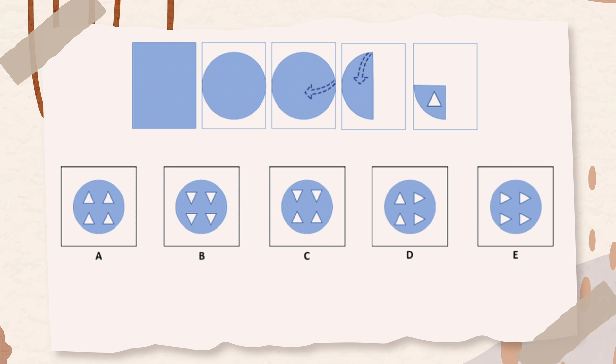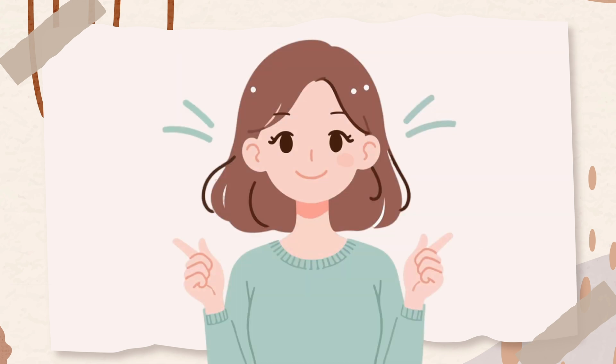A paper is cut into a circle and folded into a quarter. A triangle shape is punched into it. Since the paper was also folded in half from top to bottom, the bottom and top triangles will be mirror images of each other. Therefore, the correct answer is option C.